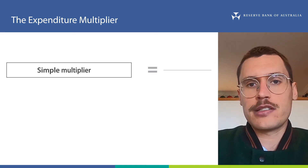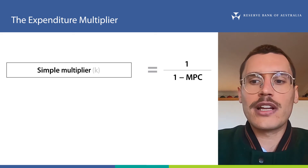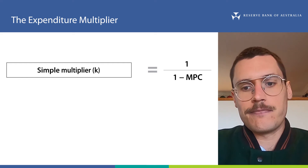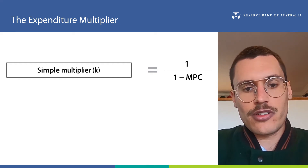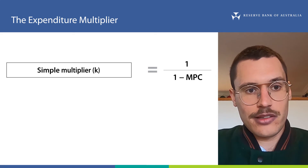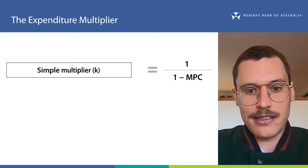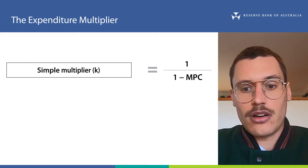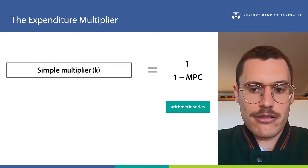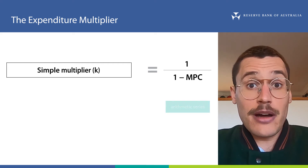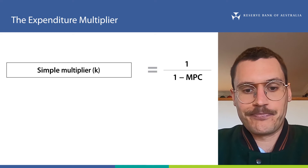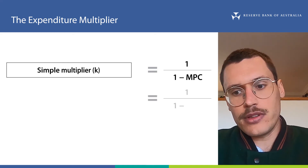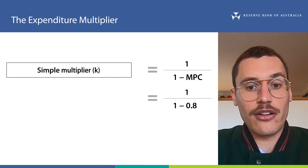This is the formula for the simple expenditure multiplier, which we'll call K. The formula is one divided by one minus the MPC. This gives you the same result as if you had gone through the process and added all the amounts spent together. If you want to understand more about how this formula is derived, I would encourage you to Google an arithmetic series. But for our purposes, we can just know how to use the formula. So with our MPC of 0.8, if we put this into the formula, we'll get an expenditure multiplier of 5.